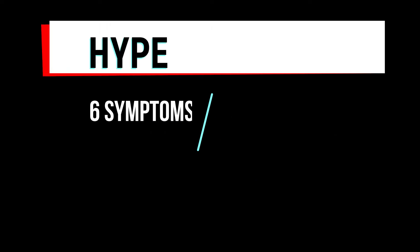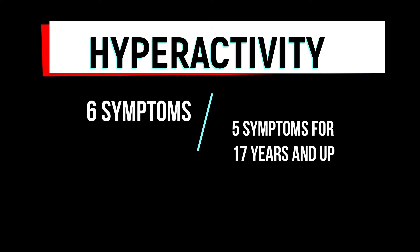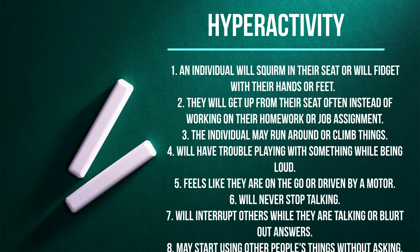Now comes the hyperactivity or impulsivity component of the diagnosis. The individual must have six of the following components in a six-month period of time. If the individual is 17 or older, then five of the symptoms must be present. Number one, the individual squirms in their seat or fidgets with their hands and feet. Number two, will get up from their seat often instead of staying focused on the task. Number three, the individual might run around or climb on items.